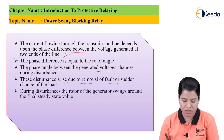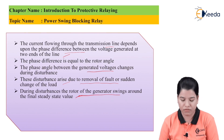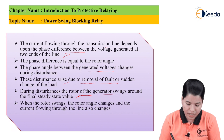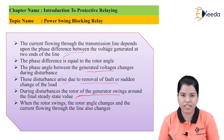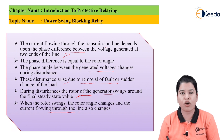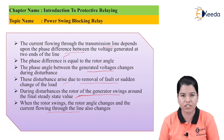During the disturbances, the rotor of the generator will swing around the final steady-state value. When the rotor swings during the power surge condition, the rotor angle changes and as a result, the current flowing through the line also changes. This is because the current flowing through the line depends upon the phase difference between the generated voltages at the sending-end generator and the receiving-end generator, which itself depends upon the rotor angle.